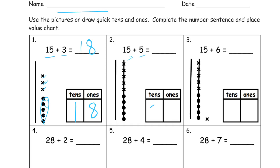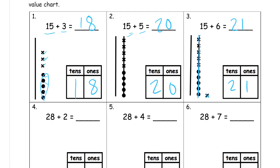And 15 plus 6 — we had enough to make a quick 10 right here, but there was one more left over, so we have two tens and a 1, that's 21. I'll just mention this while we're looking at this picture: we could have drawn this as a number bond and said that's five from that six, and this is the one more, because we'd be looking at making tens to add.